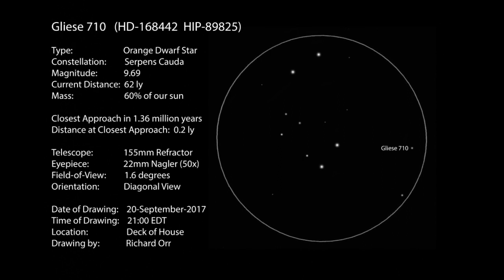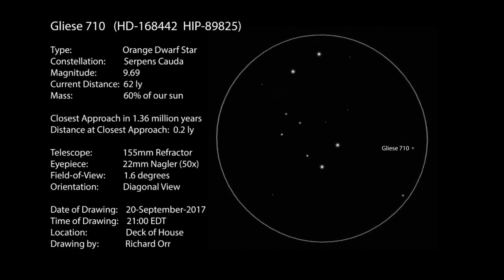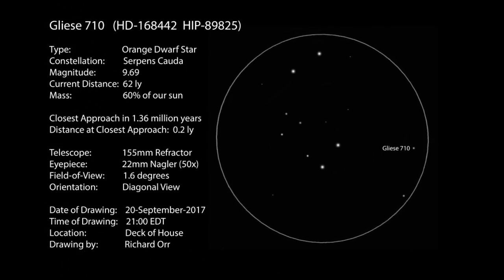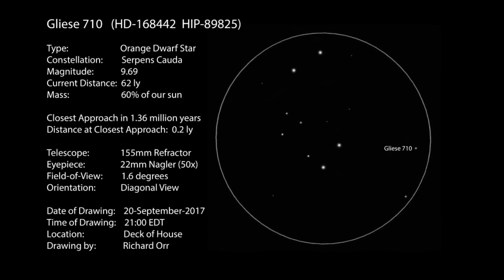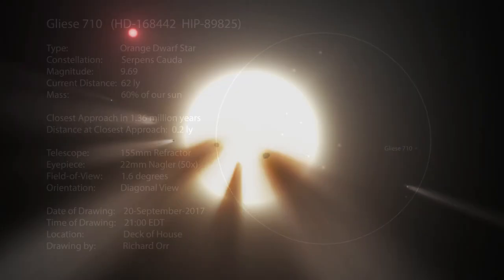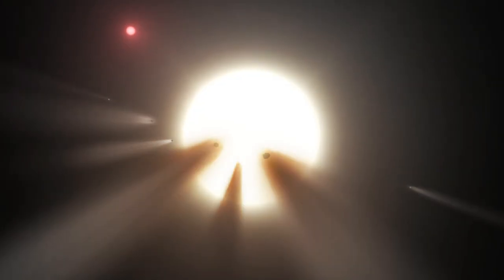One particular rogue star, Gliese 710, in the constellation Serpens, classified as a rogue star, one that has gone roaming across the galaxy, free of the gravitational chains that normally hold stars in position, is especially terrifying.